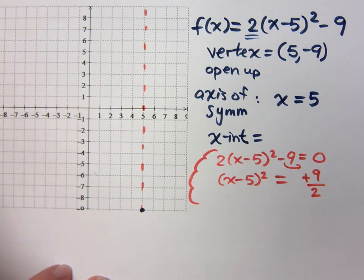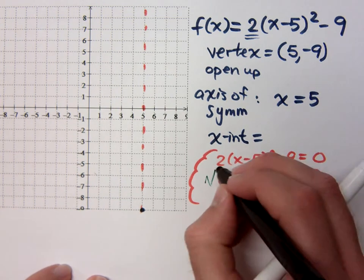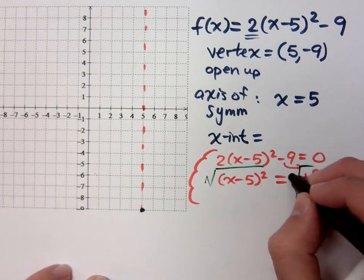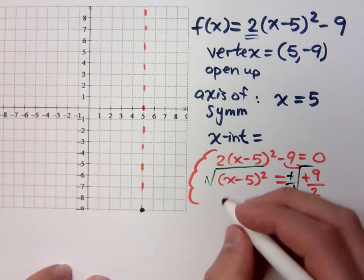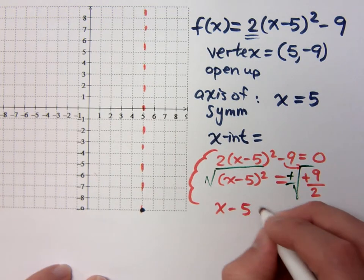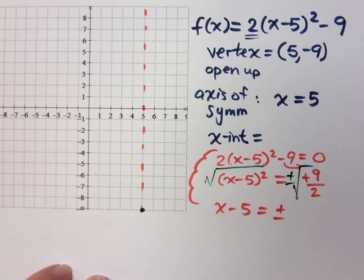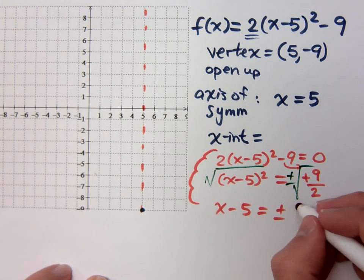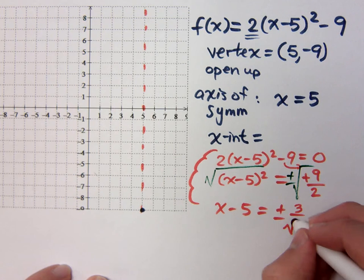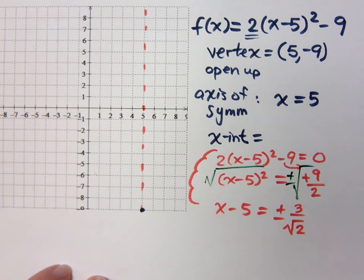And then what do I do? Use the square root property. So I have the x minus 5 equals plus or minus. This thing gets kind of weird. The square root of 9 is 3, but the square root of 2 has to be the square root of 2.